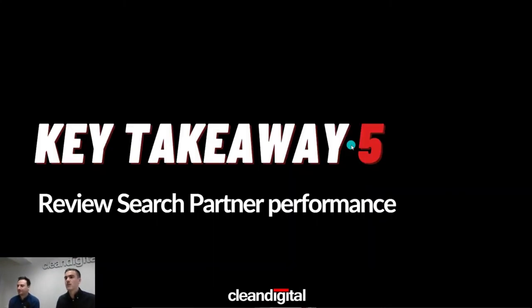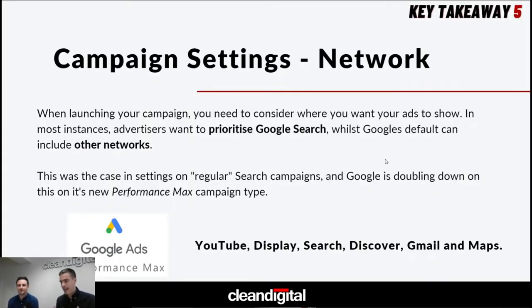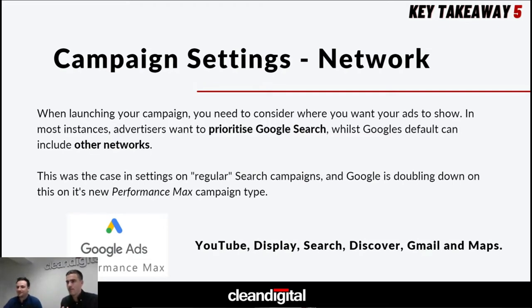Key takeaway five: review search partner performance, and more broadly, review networks at campaign level. I'll also cover Google Display Network briefly. Most people on this call think of Google Ads as bidding on keywords on Google Search — a highly reputable property. The reason this is a big one is that Google has a default setting so your ads can show on non-Google search placements by default — specifically Search Partners and Google Display Network. There can be instances where we'd want to show on those networks, but it should be the advertiser's choice to decide.